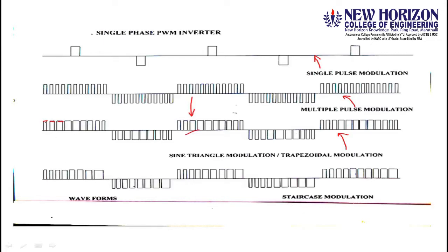For staircase modulation, the pulse widths start small and gradually increase — initially decreasing order and then increasing order. When we compare a carrier wave with a staircase waveform, we get this kind of output waveform.